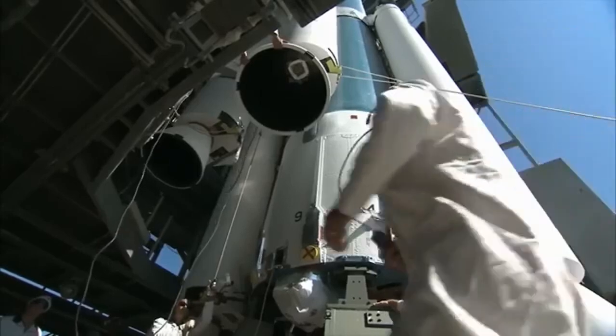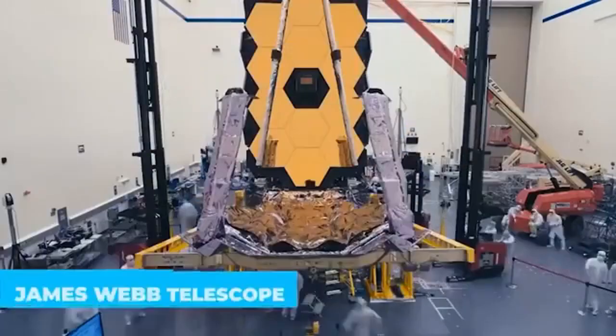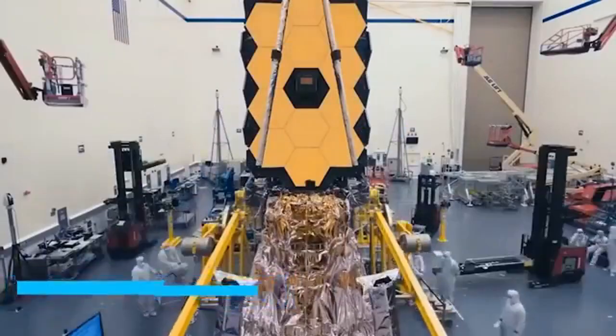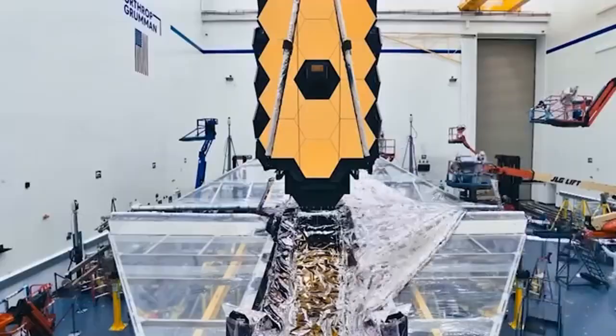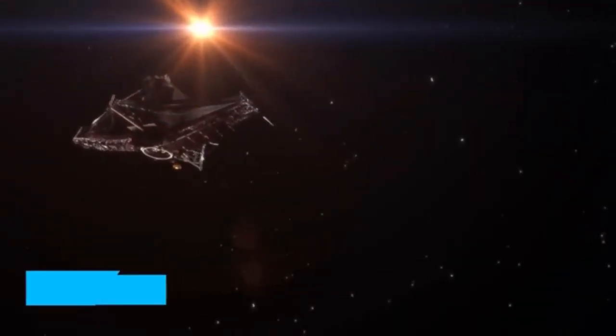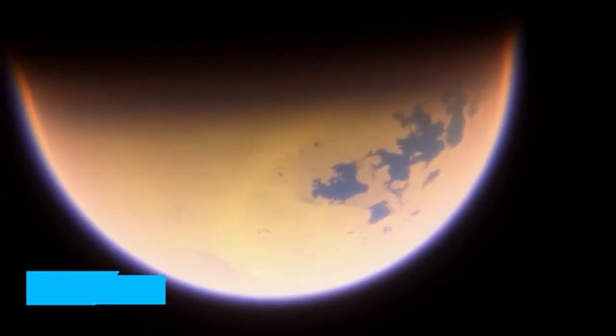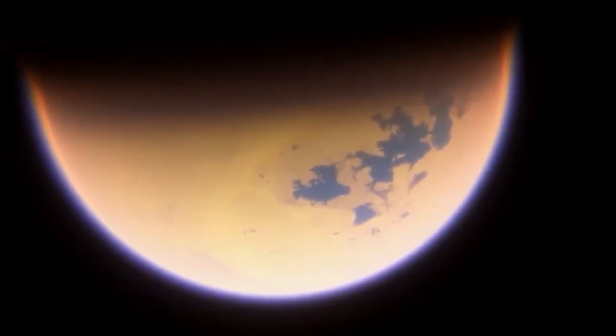Recently, the JWST made headlines with its new high-definition images of Proxima b, an exoplanet believed to be in the habitable zone of its star, Proxima Centauri. Despite being over 25 trillion miles away, Proxima b is one of our closest known exoplanetary neighbors.